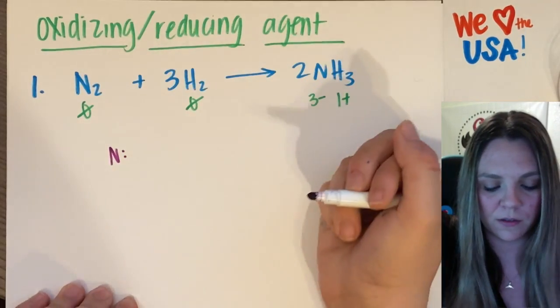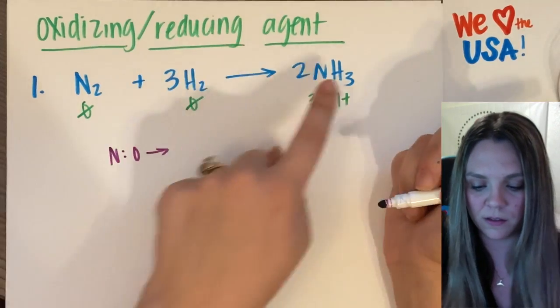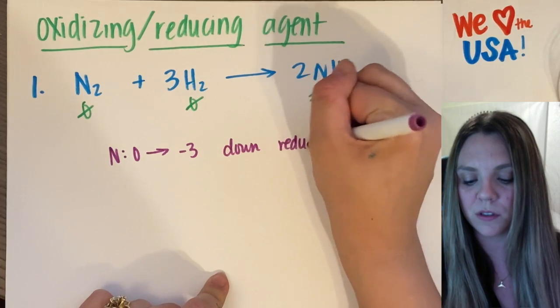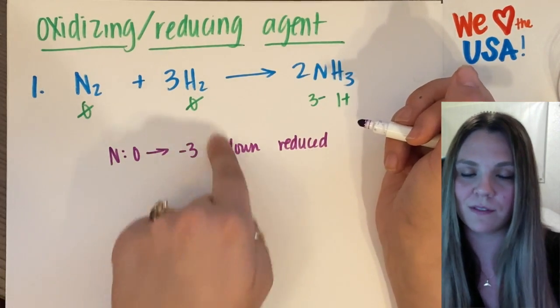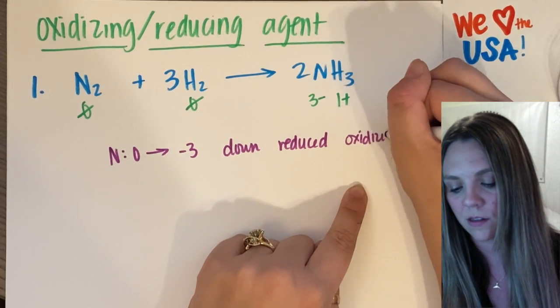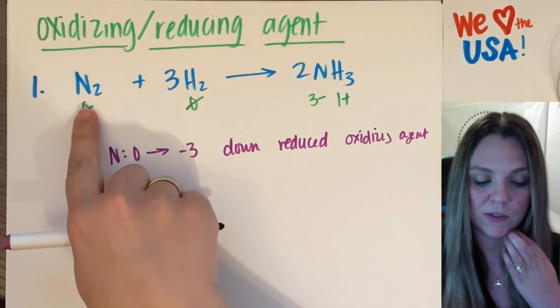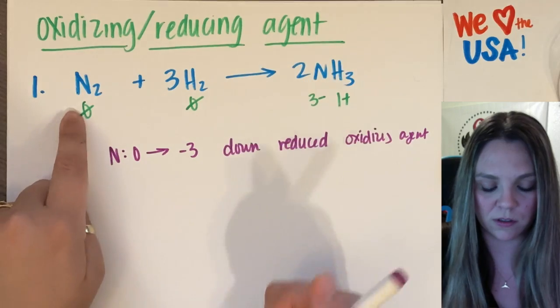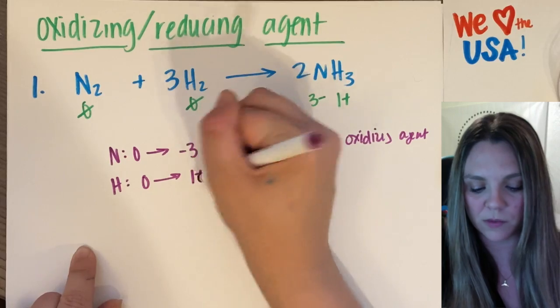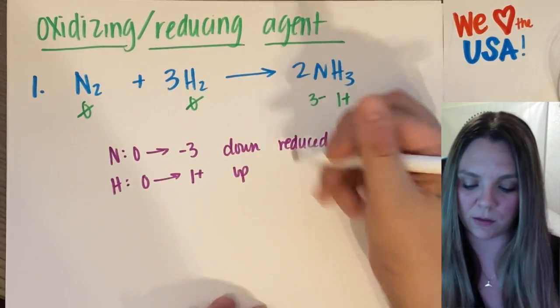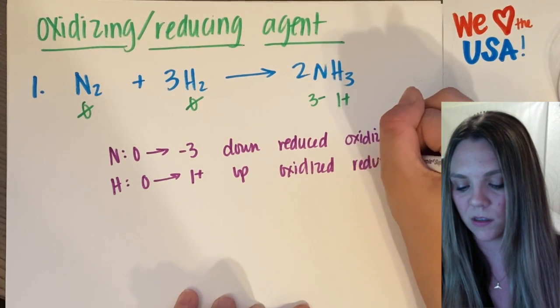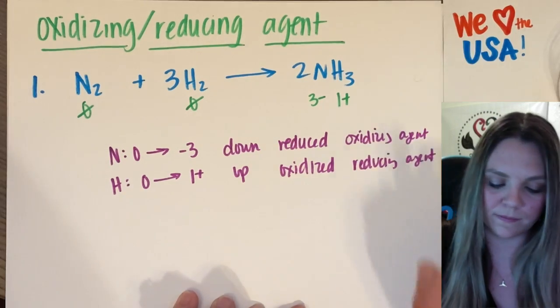Now, my nitrogen went from a zero to a minus three. It went down. It got reduced, which means if it got reduced, it forced the other thing to get oxidized, so it is the oxidizing agent. Hydrogen went from a zero to a plus one. It went up, which means it got oxidized, which means it is the reducing agent.